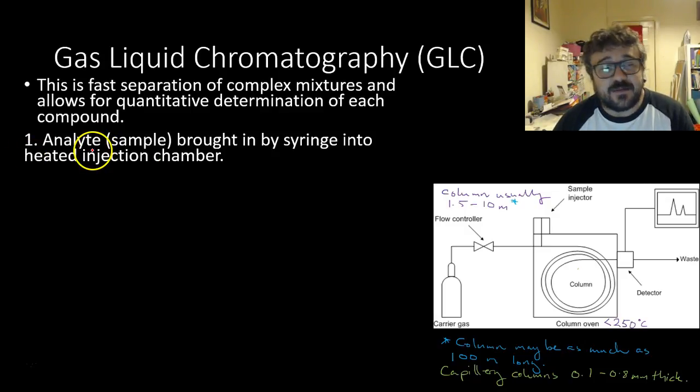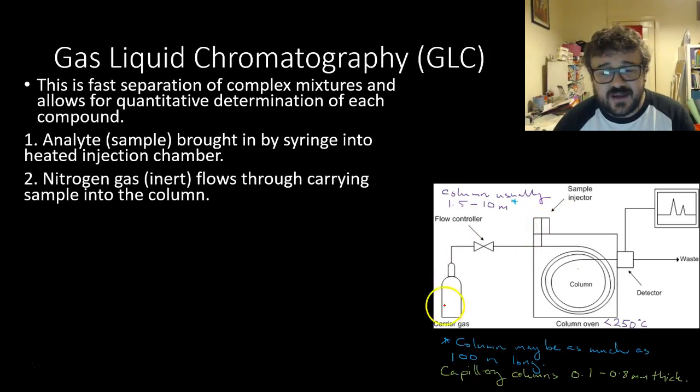So, the analyte, that's a sample, is brought by syringe into a heated injection chamber. Nitrogen gas, which starts here in the carrier gas, flows through, so it starts off here, flows past the injection container...